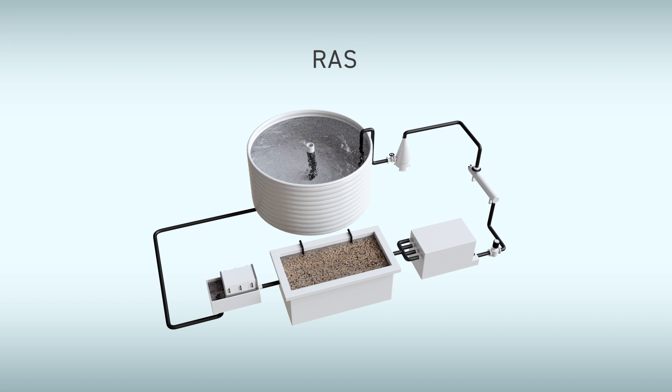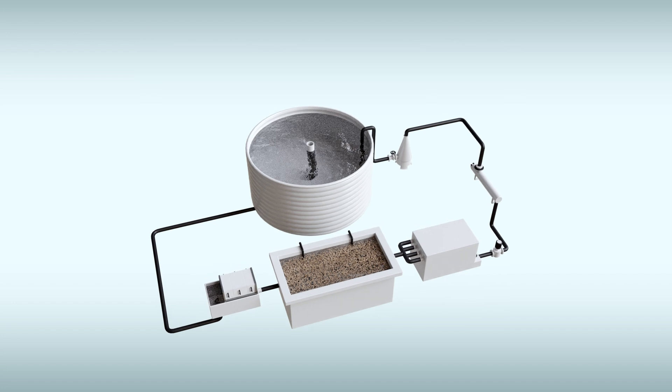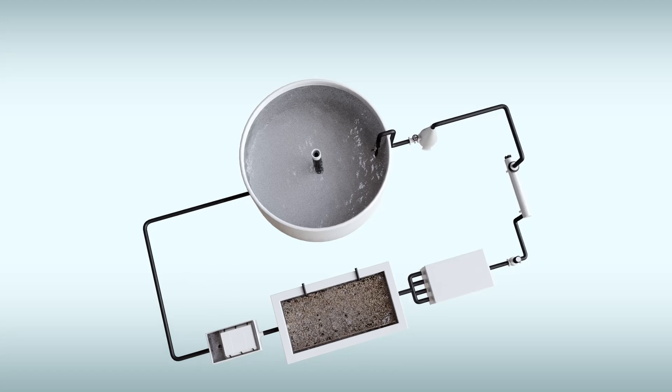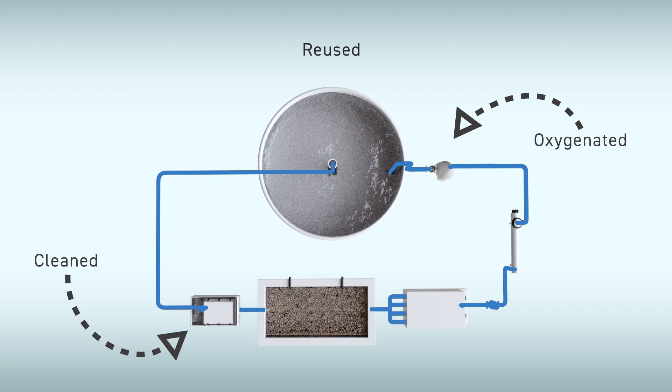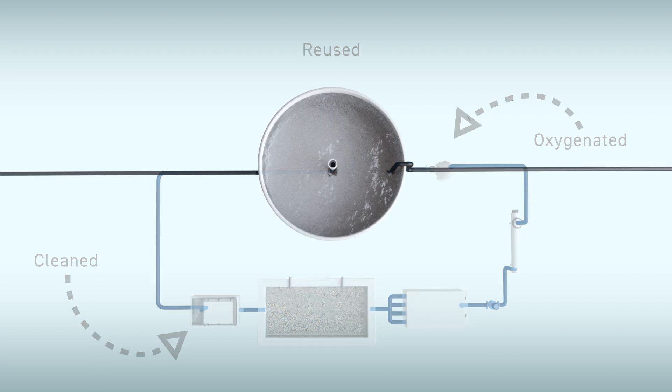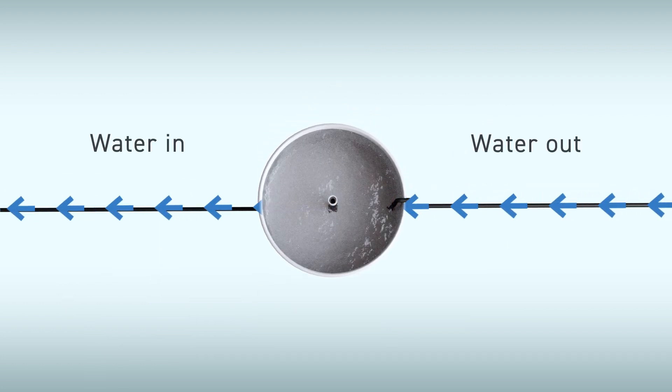RAS is an abbreviation for Re-Circulating Aquaculture System. This is a type of technology where the production water in aquaculture facilities is cleaned, oxygenated and reused, unlike traditional flow-through facilities where the production water is continuously replaced.